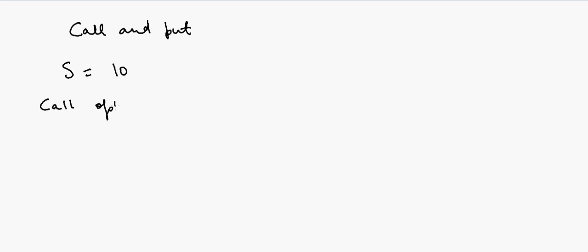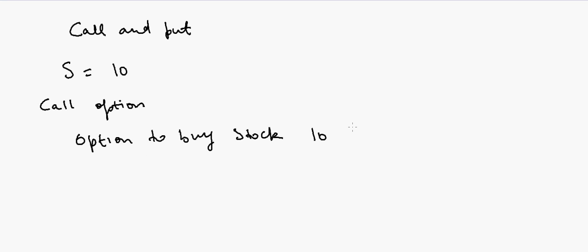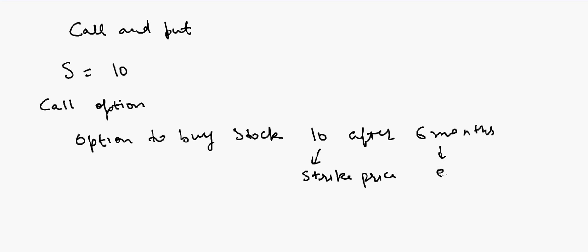So what you can do is buy a call option. A call option means that you think the price is $10 and it's going to go up, so you can say you have the option to buy that stock for $10 after six months. Somebody else is giving you this option that irrespective of whatever the price is, you can buy that stock from them for $10. We call $10 the strike price, and six months is the expiration time.